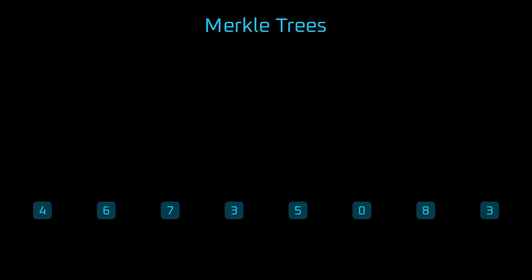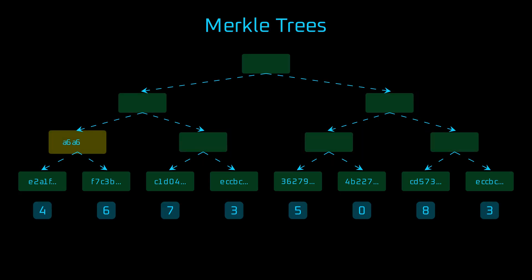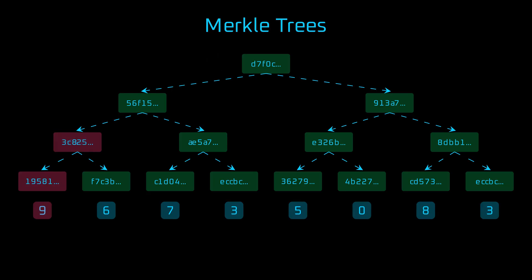This is where Merkle Trees come in handy. We'll take a look at how we can represent account balances in a tree structure for a simple eight-element vector. First, leaf nodes store values and their hashes. Then, each non-leaf node contains a hash of its two children's hashes. This creates a tree of hashes leading to a single root hash. The root hash acts like a seal of authenticity for the entire dataset — changing any element of a tree will result in changing every single hash on the path to the root, and eventually creating a completely different root hash.